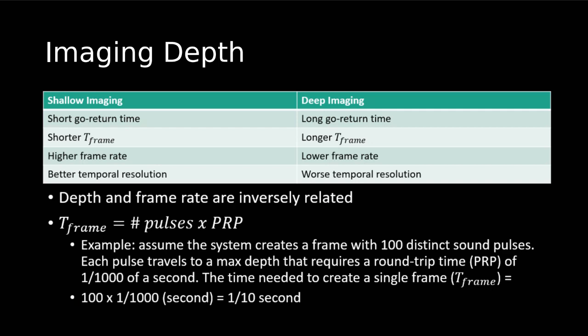With shallow imaging, we don't need as much depth, so we have a shorter go-return time — 13 microseconds per centimeter. With shallow imaging, we have a shorter T-frame, a higher frame rate, and better temporal resolution. With deeper imaging, we need more depth — the sound wave travels further and takes double the time to return. This gives a longer T-frame, lower frame rate, and worse temporal resolution.